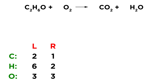Here is one handy tip: anytime you have an element that is by itself in a particular species, you want to do that one last, because you have the most freedom with it. You can get everything else balanced, and then just put whatever coefficient you need for that element without affecting any other. So we'll do oxygen last. In general, if you see O2, N2, or H2, feel free to do that one last.